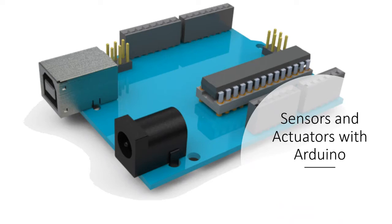The sensors are specifically for capturing data, and the actuators take that data and put it into action. Good examples of sensors include the sound sensor, temperature sensor, and IR sensor. Actuators are things like the motor — last week we talked about the different kinds of motors available and how to use them.